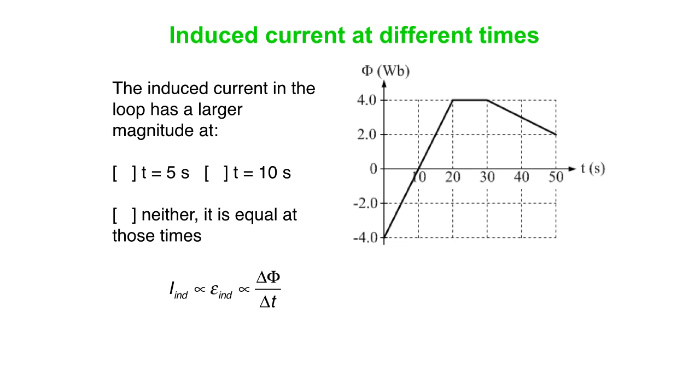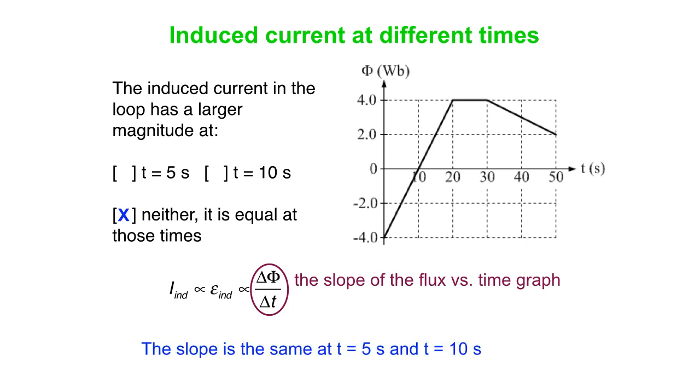Our answer here is that the induced current is proportional to the induced voltage, which is proportional to the slope of the magnetic flux versus time graph. It's proportional to delta flux over delta t, but that, of course, is the slope. And if you look at 5 seconds and 10 seconds on this graph, you will find that it's exactly the same slope.